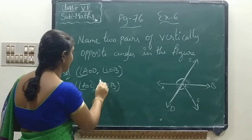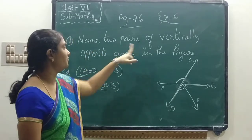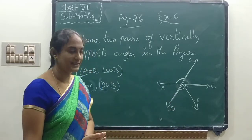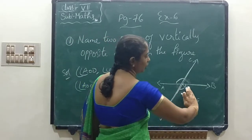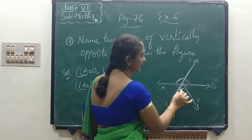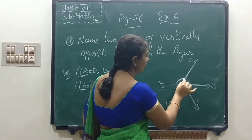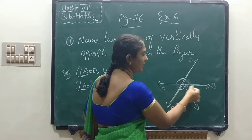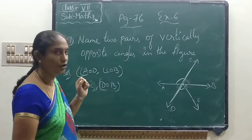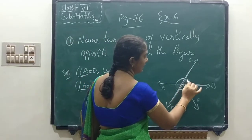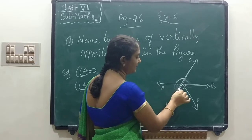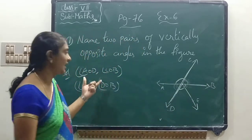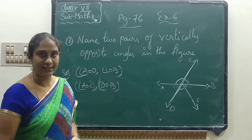Again I am repeating. In this figure, if you close one pair, we can observe angle AOC and angle DOB using those arms. Next, the other angle formed: angle AOD and its vertical opposite angle COB. So those are the two pairs of vertically opposite angles we got.